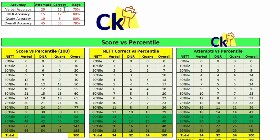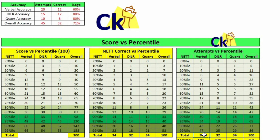For example, my verbal — I do 18 questions correct out of 20. In that case I just need to do 16 questions correct to reach my target. Now, for example, if my accuracy is 12 correct out of 20, that is 60 percent accuracy, then to get 99 percentile I need to do 47 question attempts. But the paper is 34 marks — it is impossible to reach that target. You have to do all 34 questions and then you get 95 percentile.